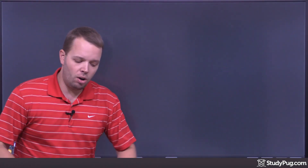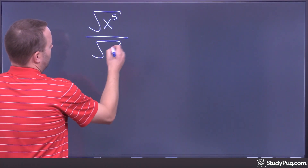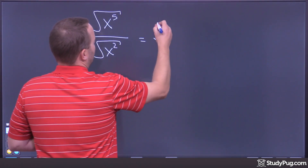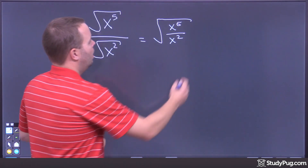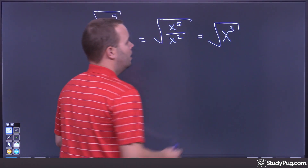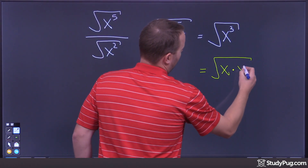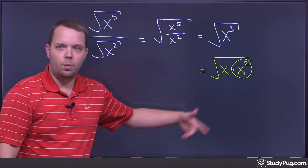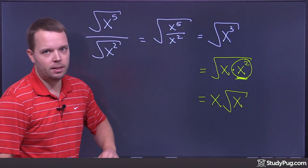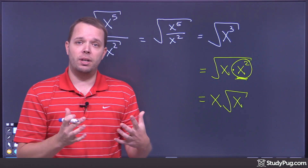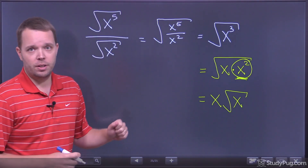This also applies with variables. For example, the square root of x to the fifth divided by the square root of x squared equals the square root of x⁵ ÷ x², and using exponent laws — subtracting exponents — that's the square root of x cubed. That can be simplified: x cubed is x times x squared, and x squared is a perfect square, so I bring out an x to get x times the square root of x. The multiplication and division rules for radicals are straightforward: you can combine or split what's underneath a single radical sign.